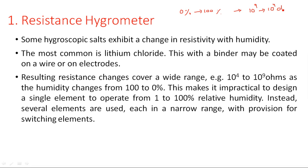As humidity increases from 0 percent to 100 percent, the resistance of the device decreases — both parameters are opposite to each other. As humidity increases, resistance decreases from 10^9 ohms to 10^4 ohms. Conversely, if humidity decreases from 100 to 0 percent, resistance increases from 10^4 to 10^9 ohms.